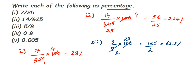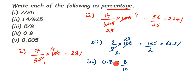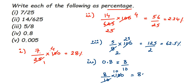The fourth question has a decimal: 0.8. Whenever they give you a decimal, first convert it into a fraction. After the decimal there is only one digit, so remove the decimal point and divide by 10. If you had two digits after the decimal you'd divide by 100, three digits by 1000, and so on. So 0.8 becomes 8 by 10. Now multiply by 100 — 10 tens are 100 — so the answer is 80%.